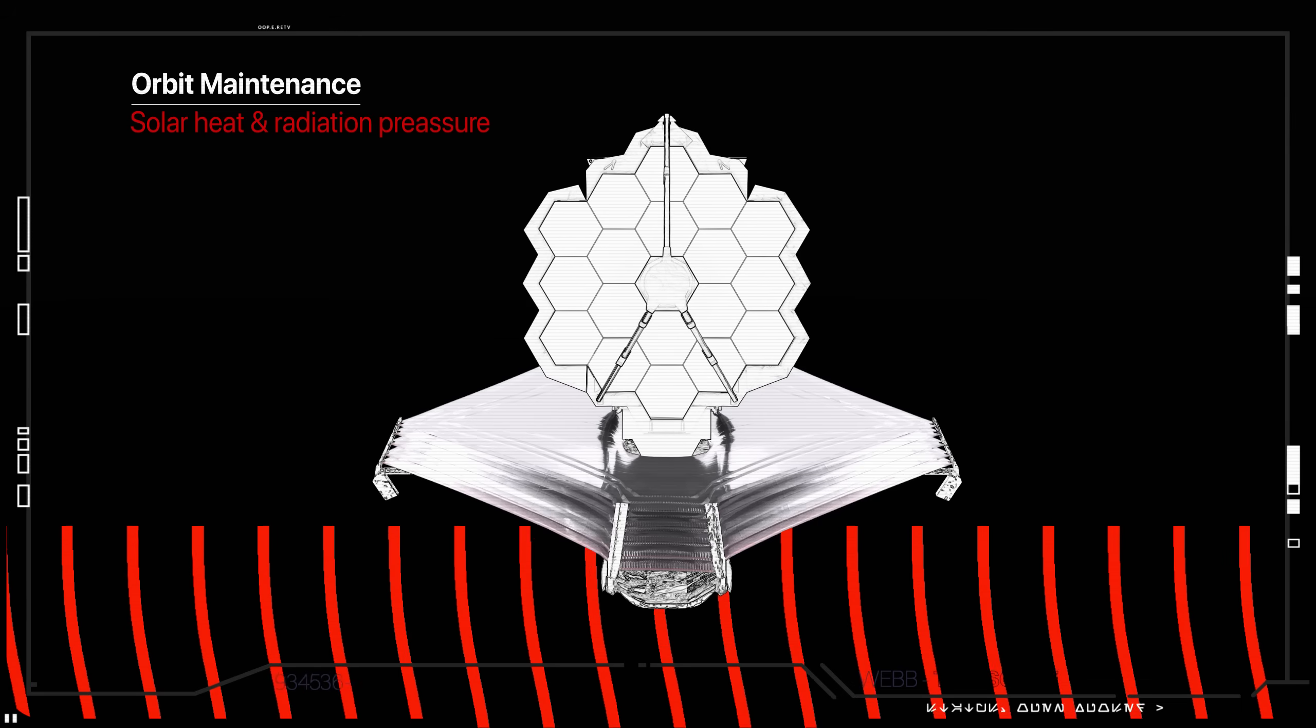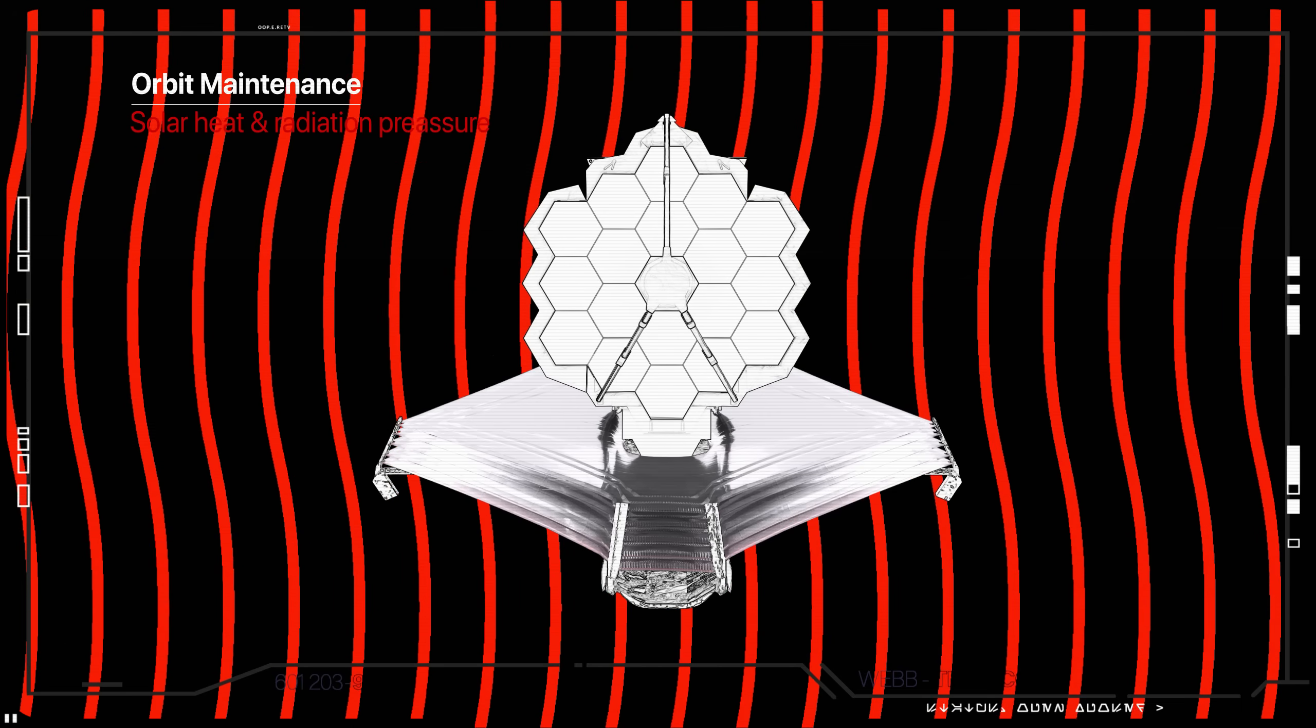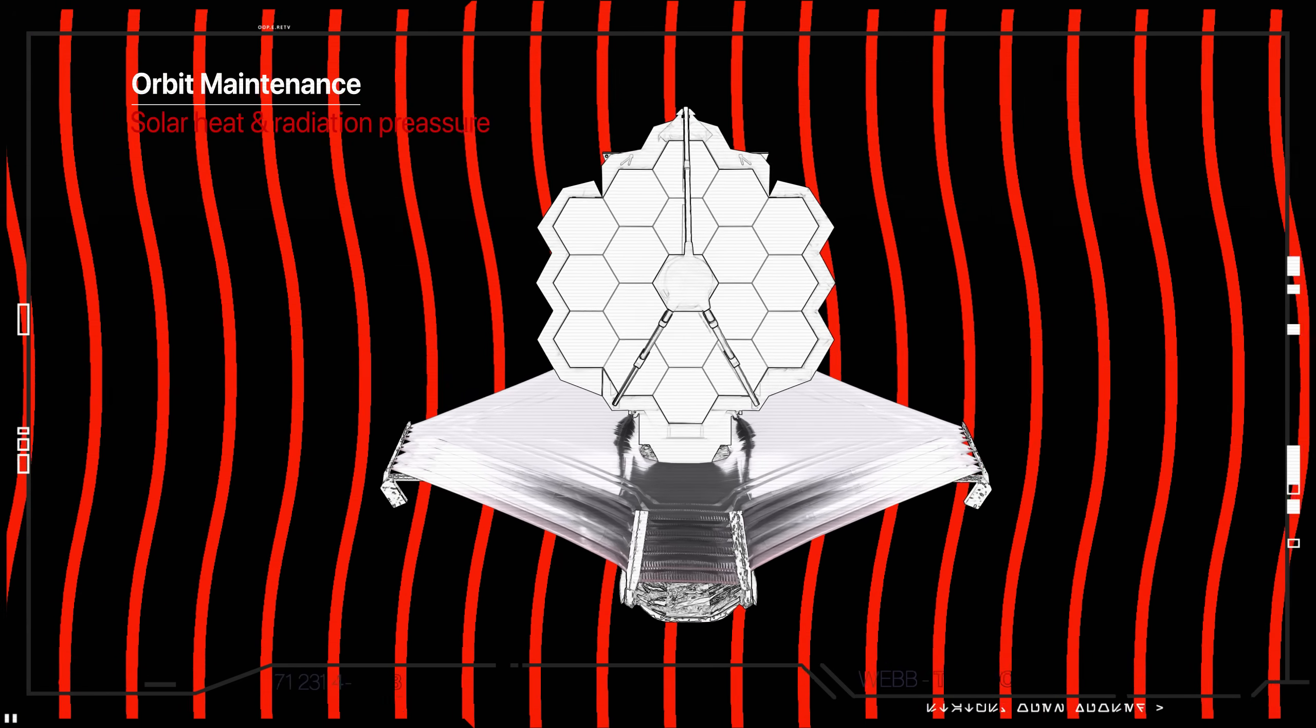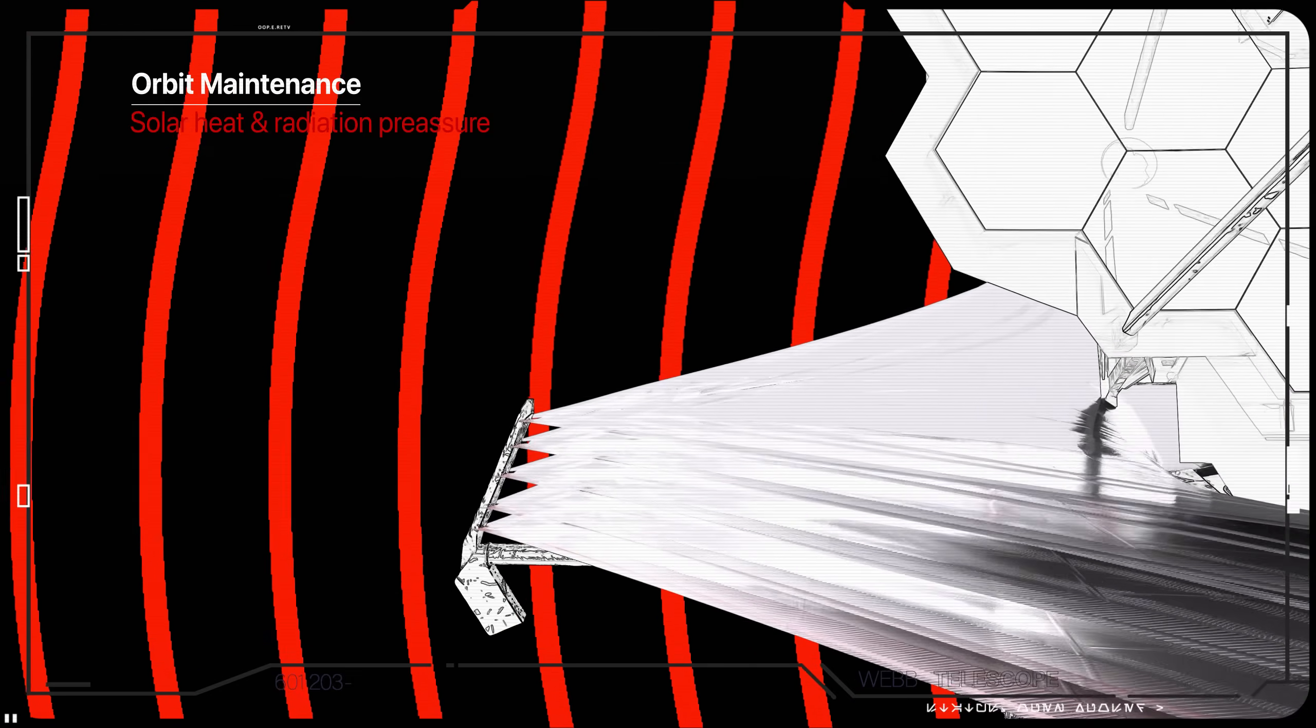The orbit will be biased to compensate for mean outward forces associated with gravitation of the planets and radiation pressure on the sunshield.